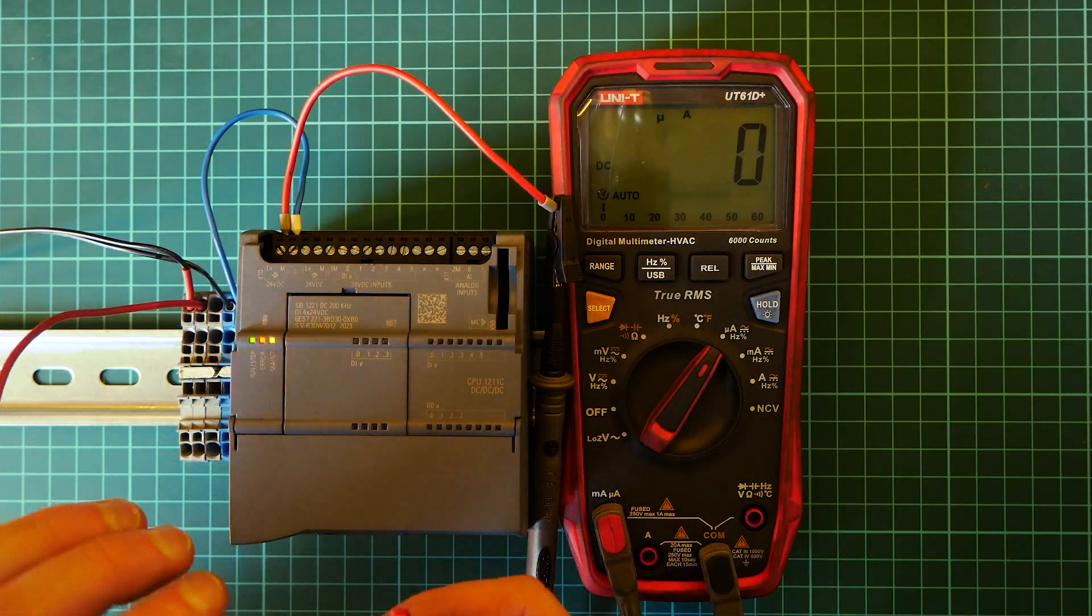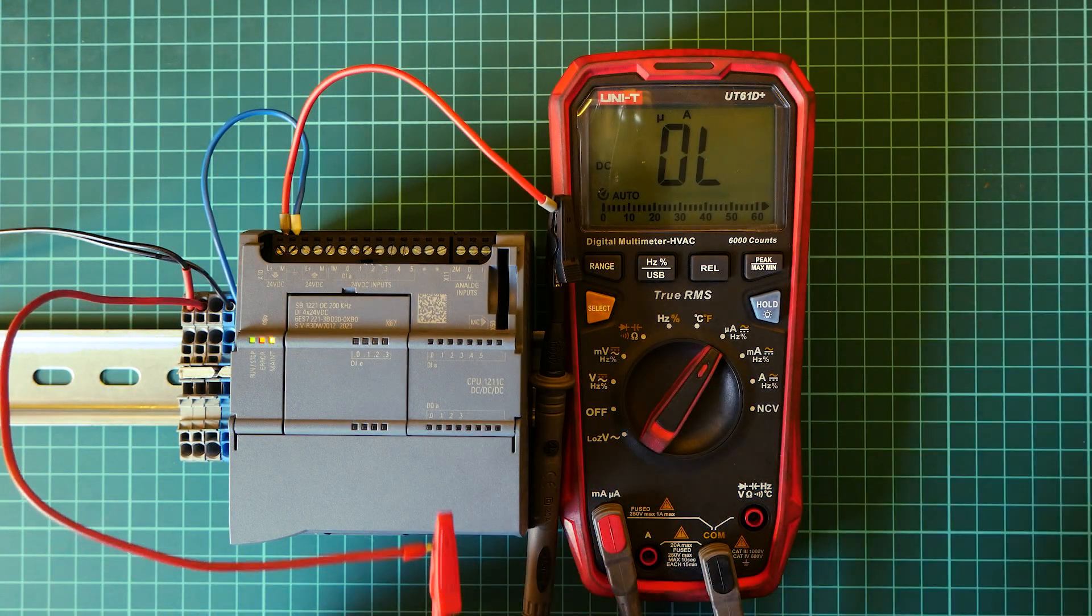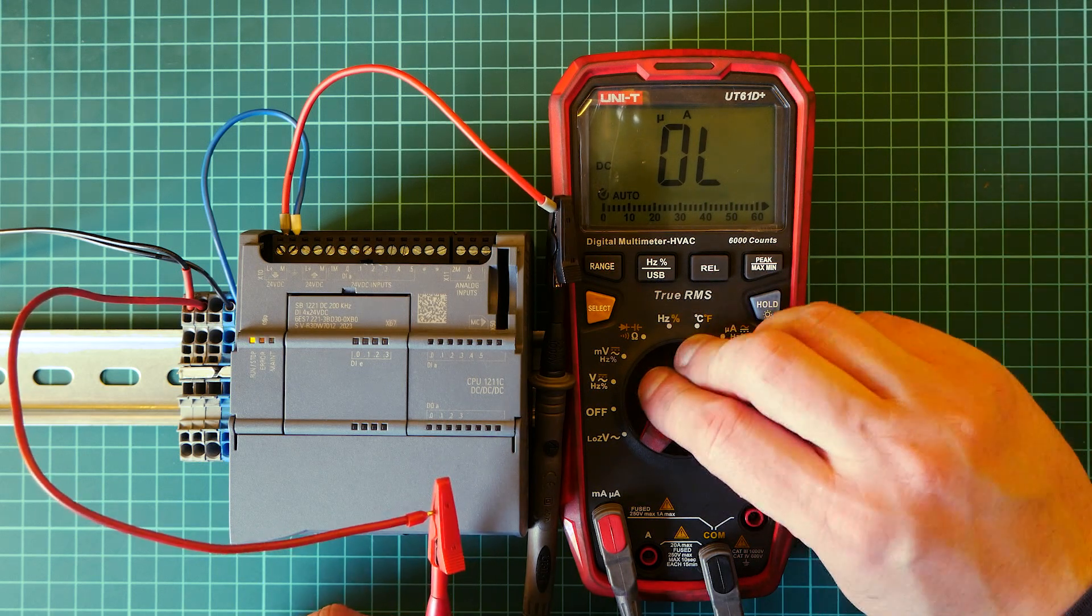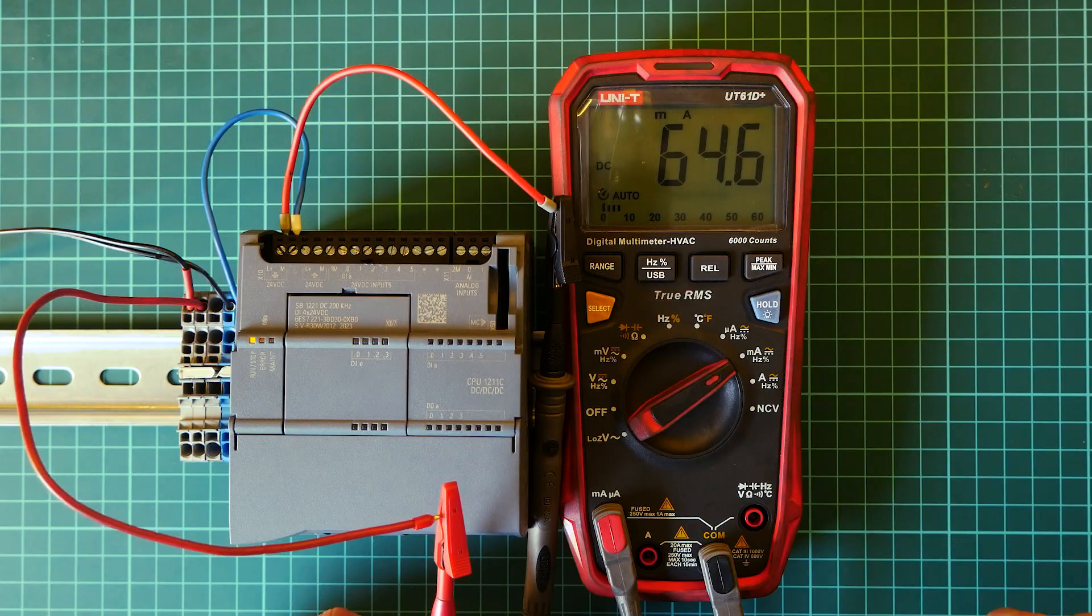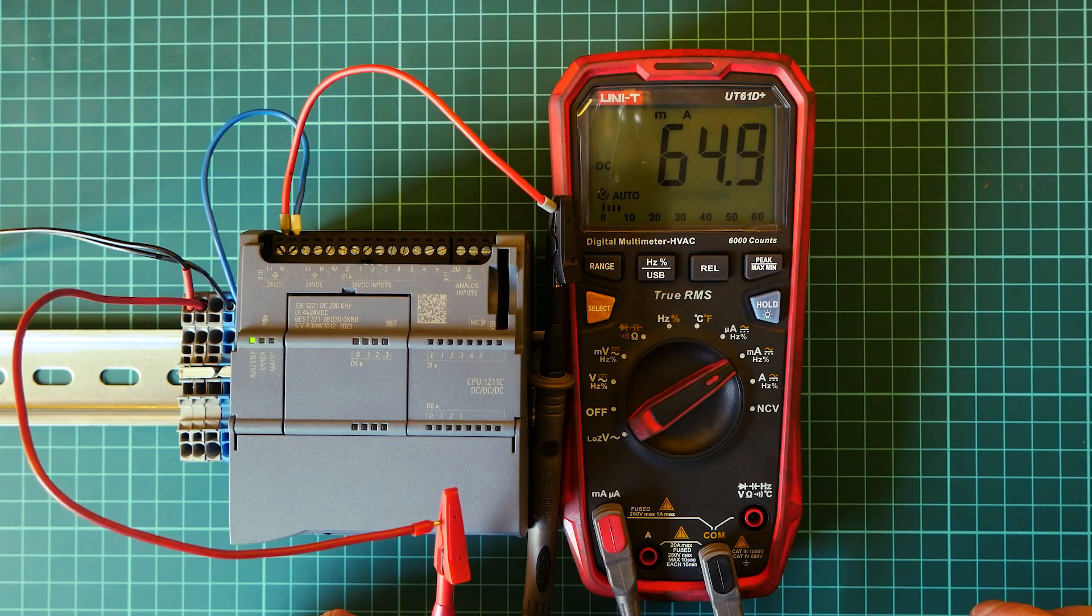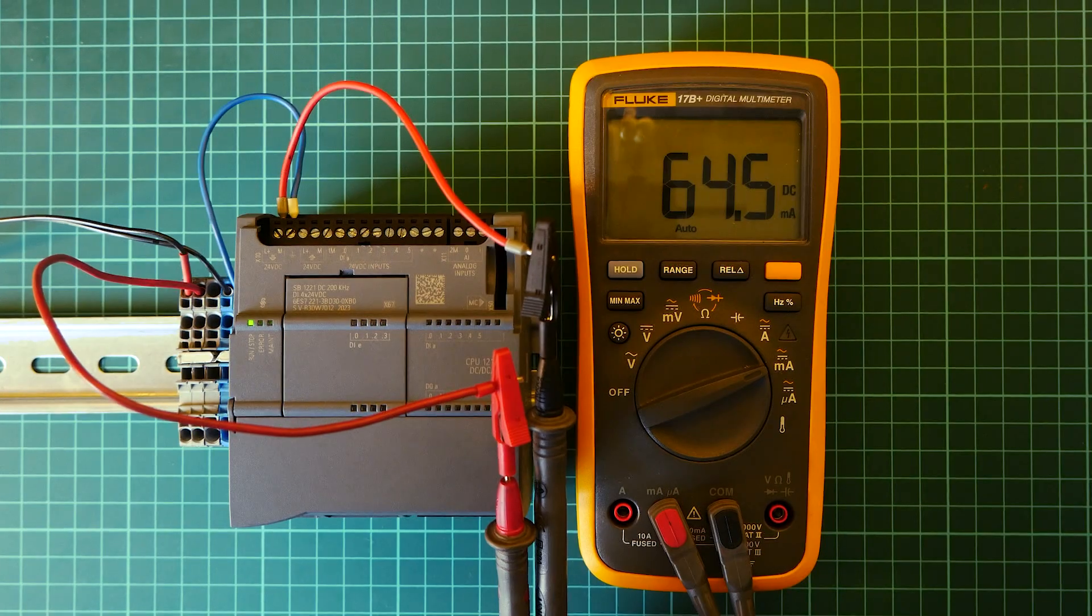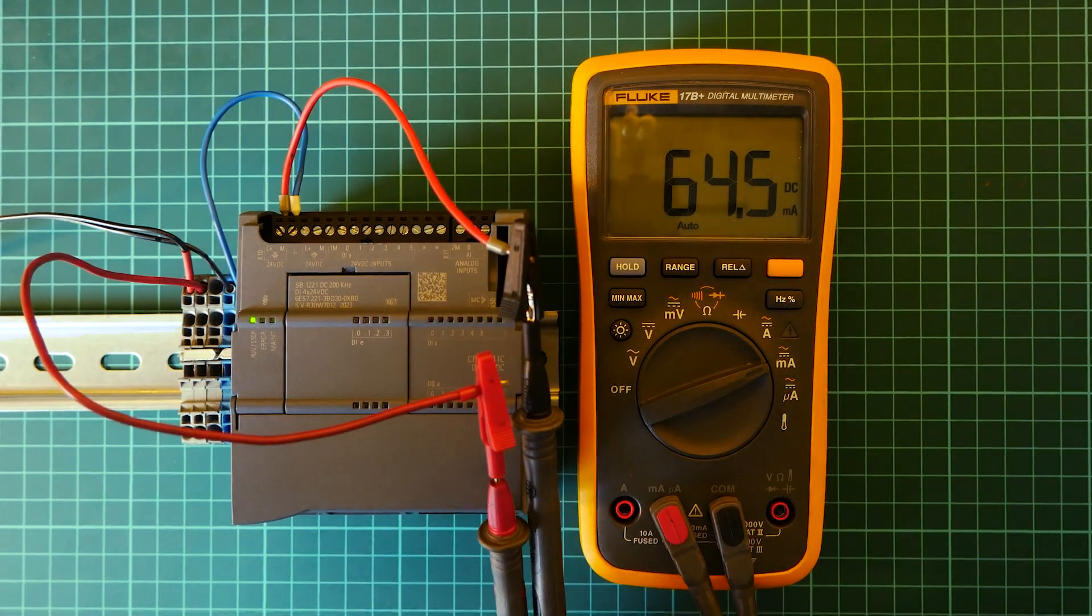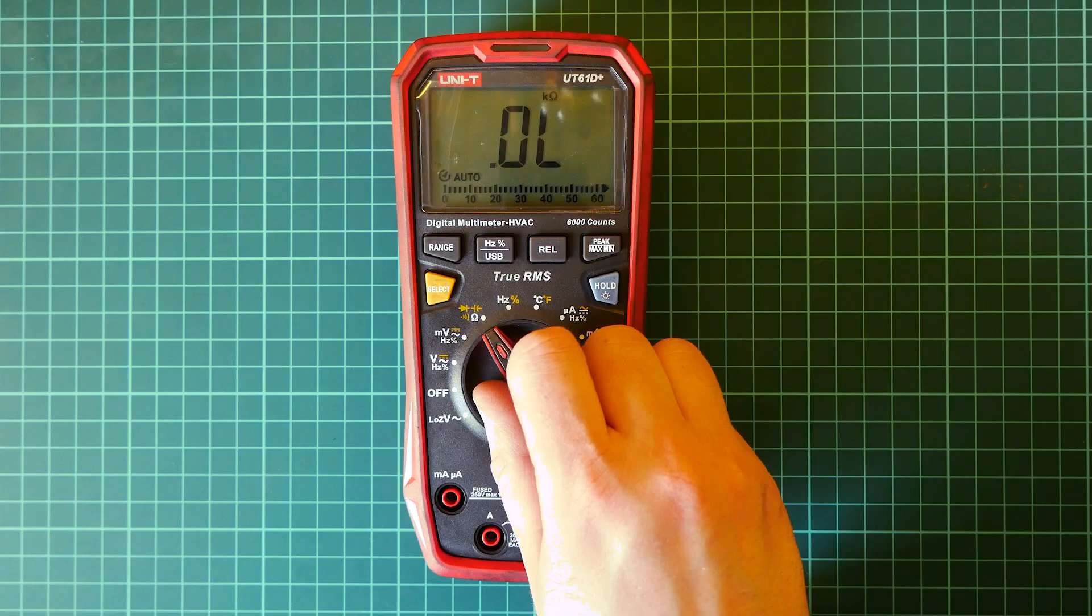So I selected microamps, so it's over limits. So it shows 64.9. My Fluke multimeter shows 64.5.